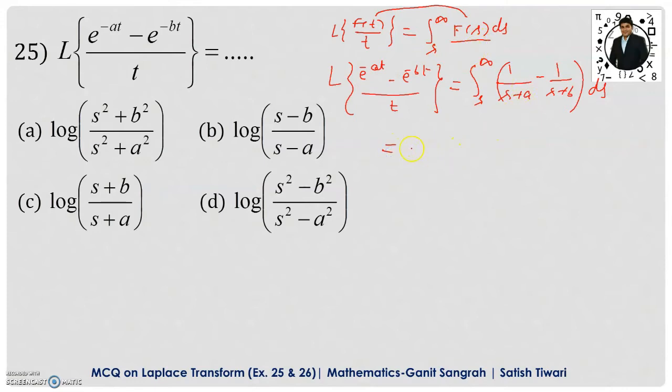Now, tell me the integration of 1 upon s plus a. It is log of s plus a minus integration of 1 upon s plus b is what? Log of s plus b and we have to put the limit here from s to infinity and now use the logarithmic property. This will be the log of s plus a upon s plus b with limits from s to infinity.